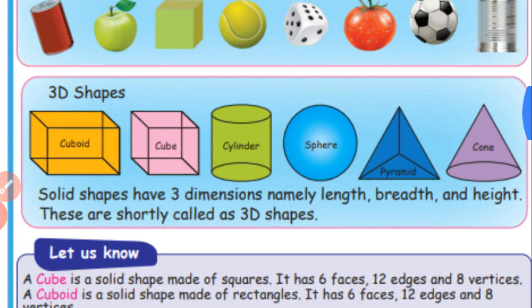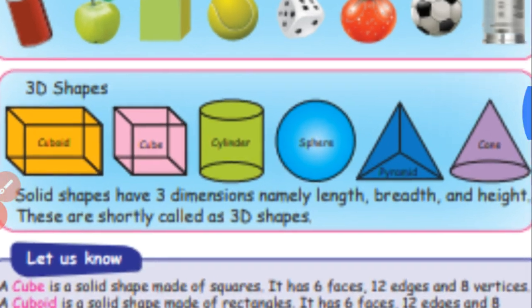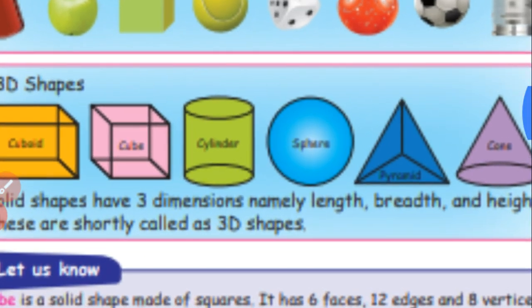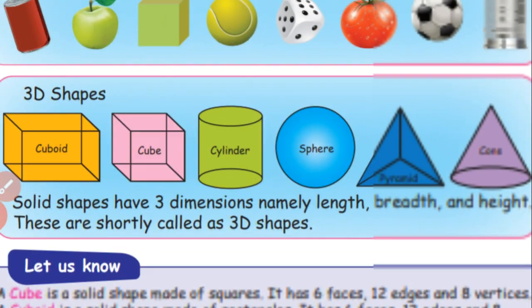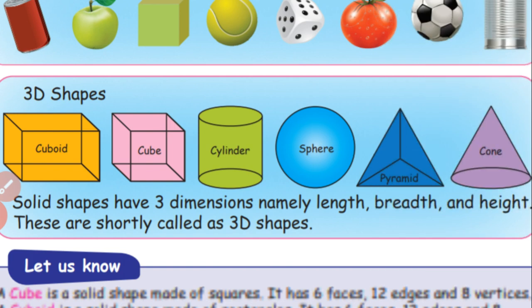These are the 3D shapes. 3D shapes means three-dimensional shapes. Three dimensions means height, length and breadth.